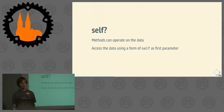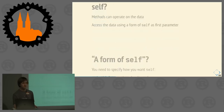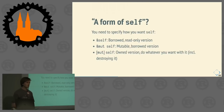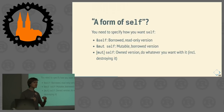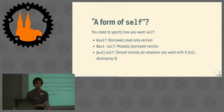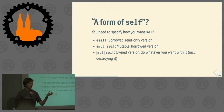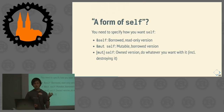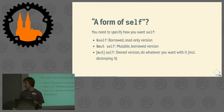Form of self — yes, in Rust you actually have to annotate which kind of self you want. Do you want a reference to self that you can only read? Do you want a mutable reference to self? Or do you want to take ownership of self with `mut self`? The owned version is the only version that can actually take the data and destroy it. The other ones can only read or manipulate it.